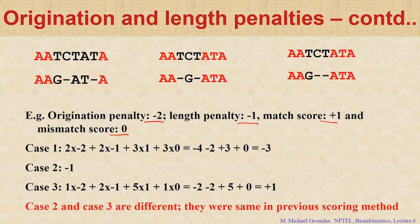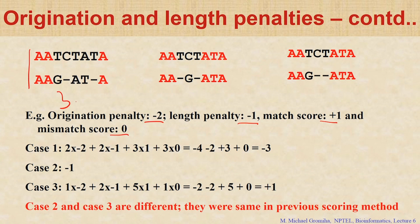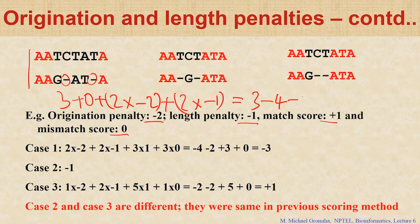If you do this, what is the score for the first alignment? Match score: 3. Mismatch score: 0. How many origination penalties? 2 — so 2 times minus 2. How many length penalties? 2 times minus 1. So this gives us 3 minus 4 minus 2, which is minus 3.